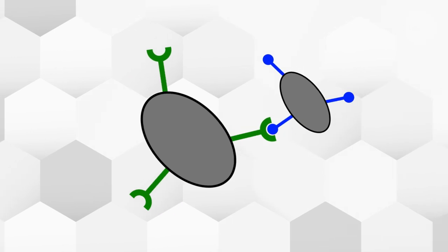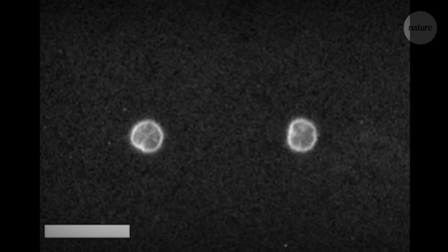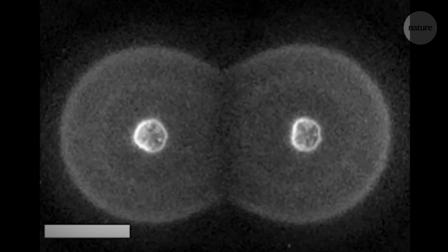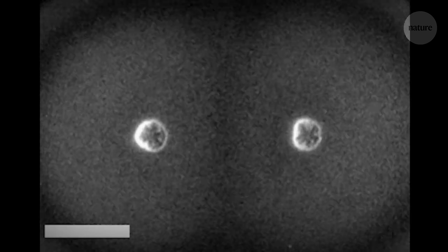Adhesins work like keys that fit into specific locks. As bacteria multiply, they form colonies that expand or swarm. Normally, when two colonies meet, they create one giant colony.